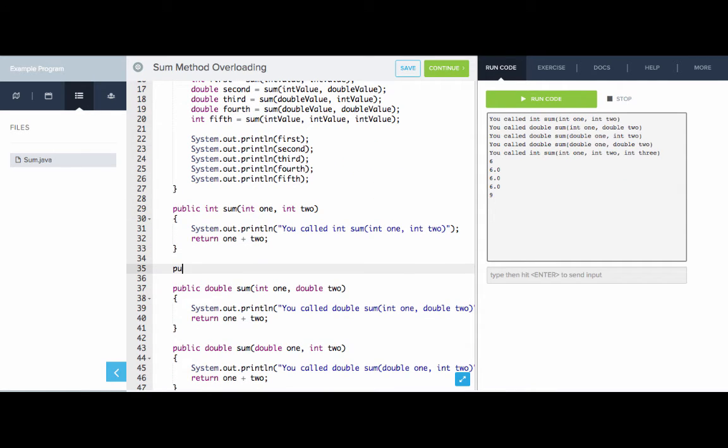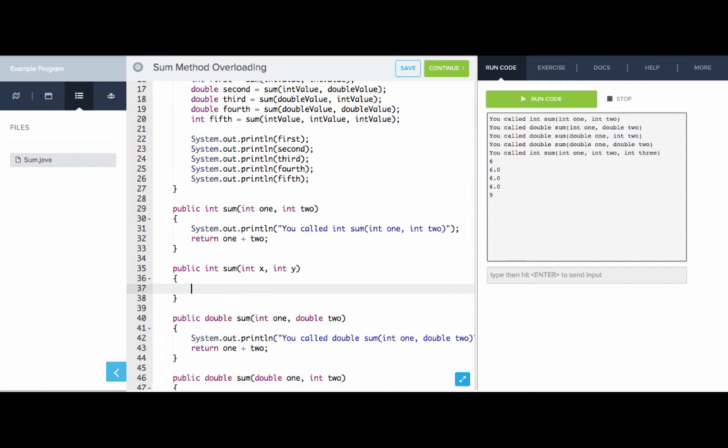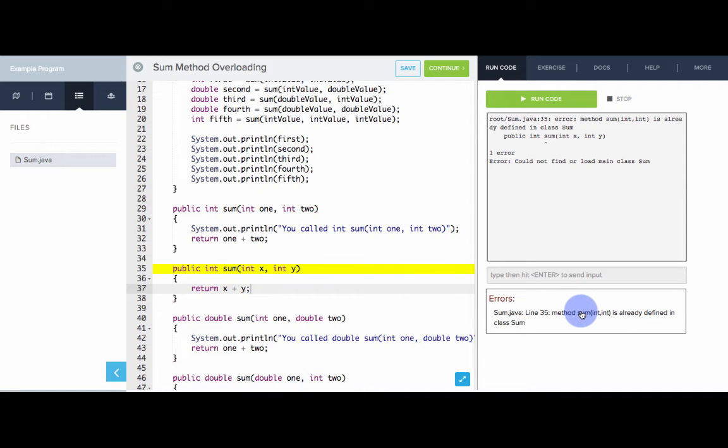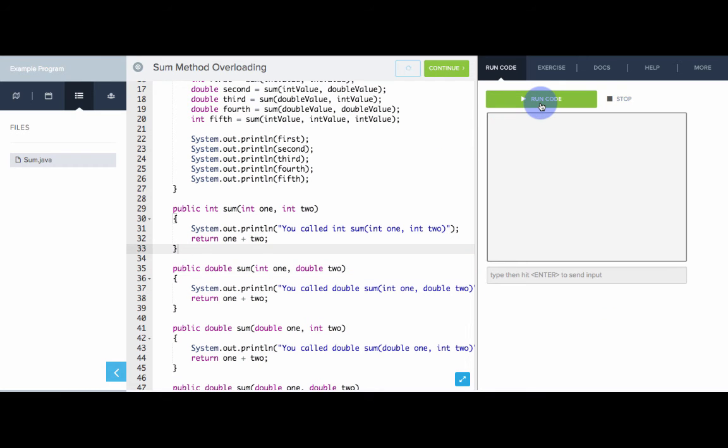Now, what if we tried writing a sum method that had the same method parameters, but different names, int x and int y. Return x plus y. Will Java allow us to do this? The method sum int int is already defined in the class sum. So, you cannot define the same method twice, and it only goes by the types, not by the names. So, if we delete that, it should be running well again. Great.